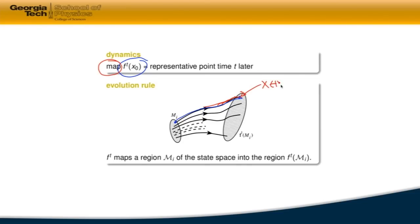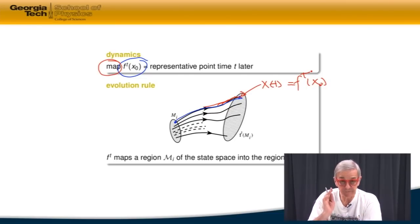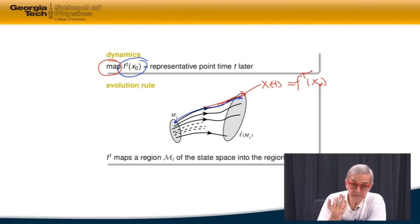So x at t is starting at the initial time and applying our law of, let's say, motion or evolution. And it's crucial that this is unique, at least forward in time. We will discover very soon that we actually care not only about individual states, but the much more useful notion is to care about whole regions of state space.